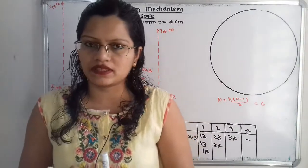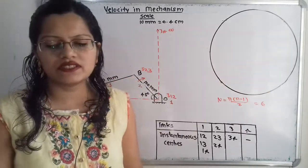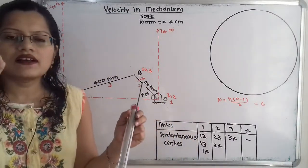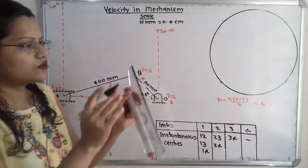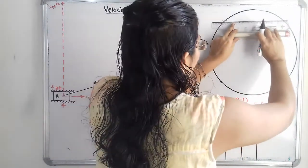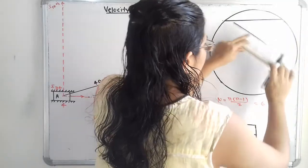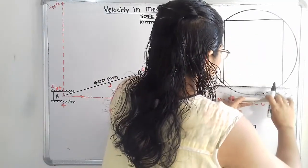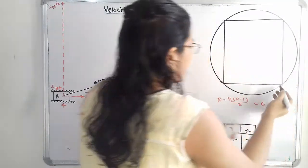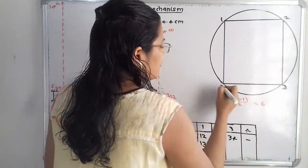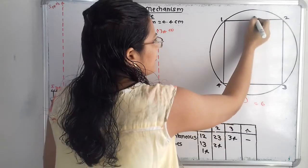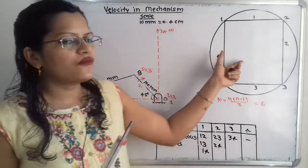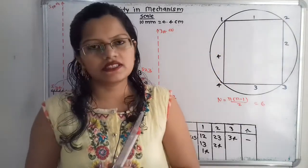Now we find the neither-fixed nor permanent instantaneous centers using Kennedy's method. For that we draw a circle and inside it place the four links, represented by four points on the circle numbered 1, 2, 3, and 4, with all adjacent points connected.